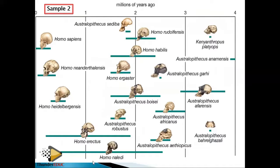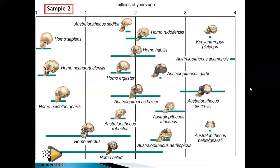They can ask you how many genera are here. You count: Australopithecus is one, Homo is two, Kenyanthropus is three — that gives three genera. Remember, genus is the first name; as long as it repeats, you've already counted it. For species, you count all of them — sapiens is one, neanderthalensis is two, and so on.